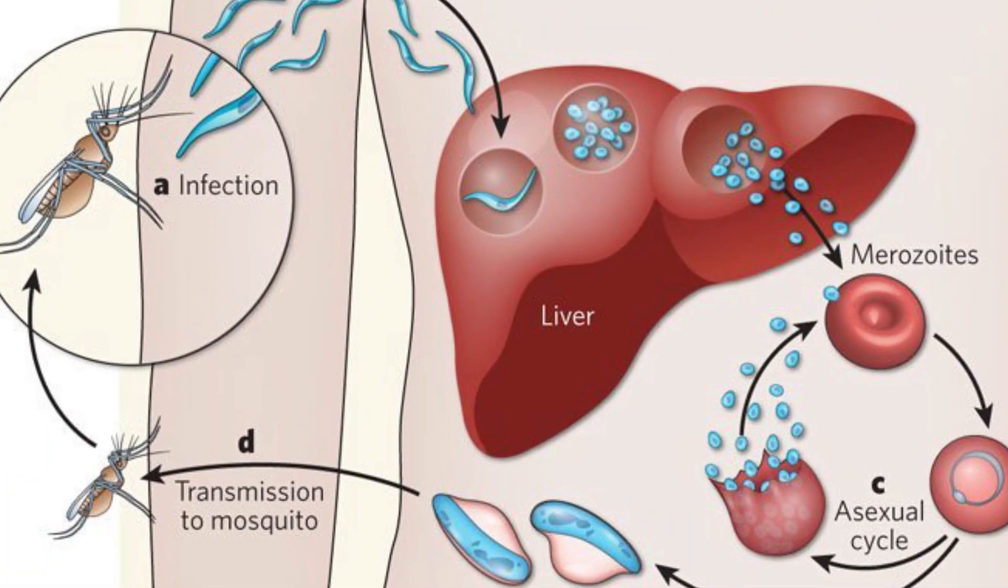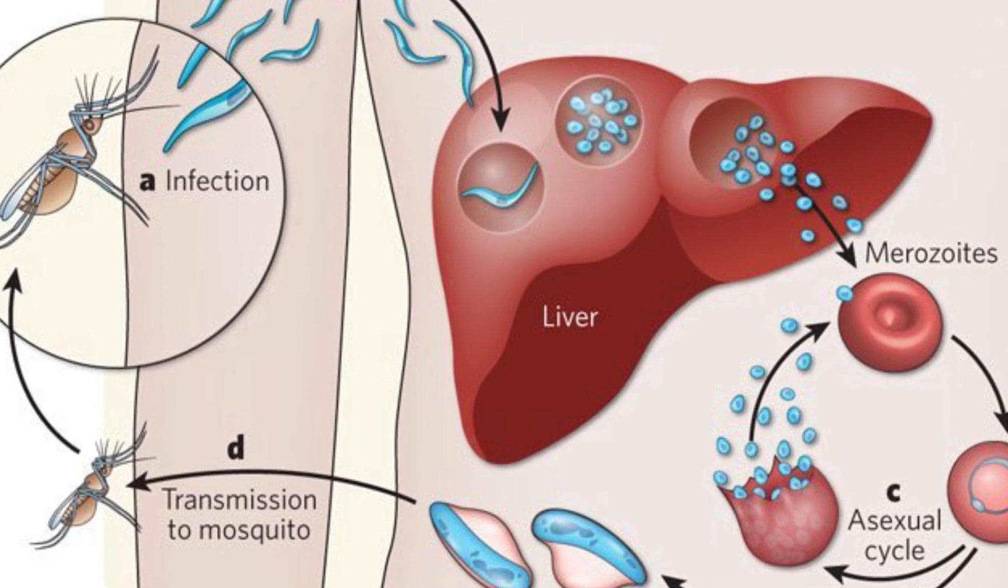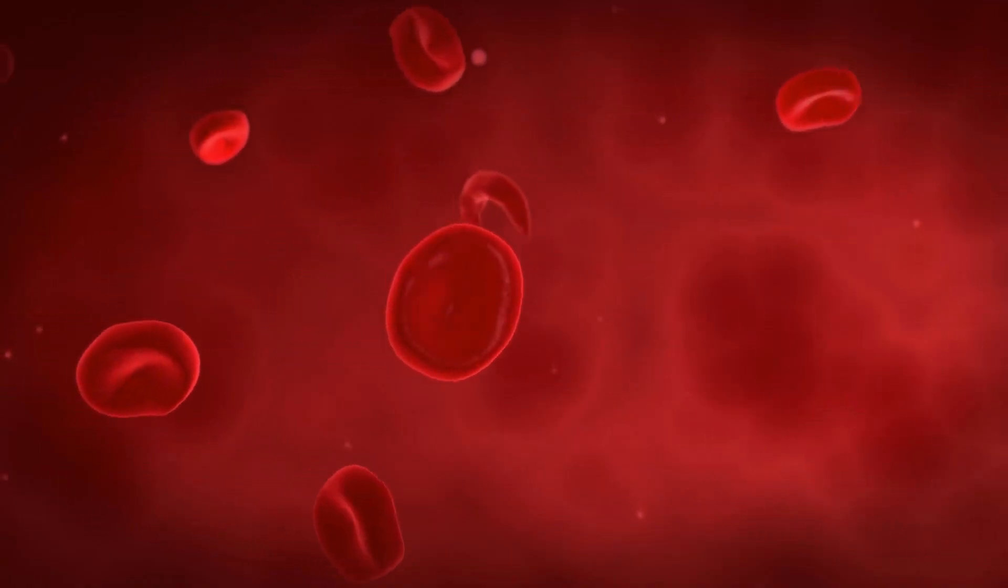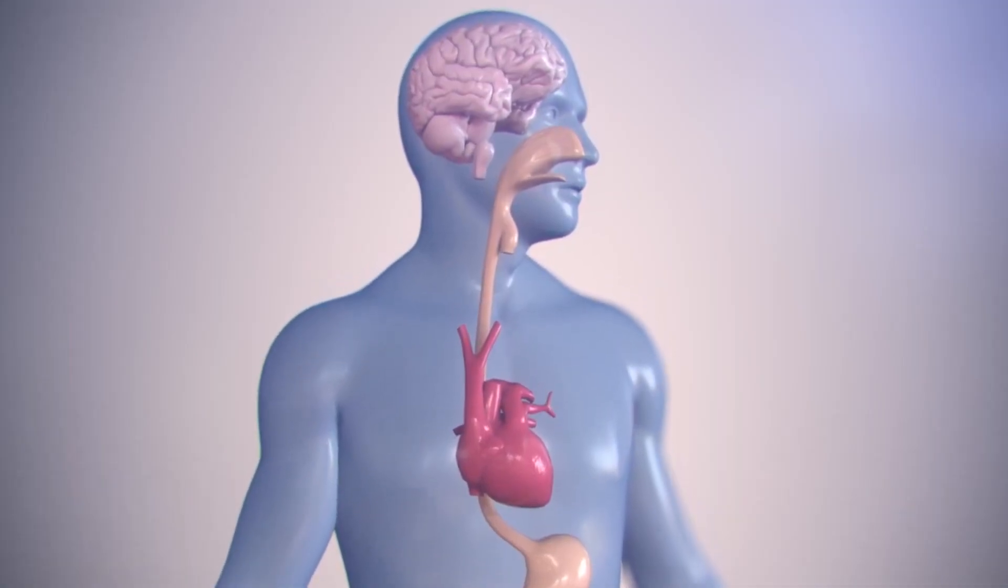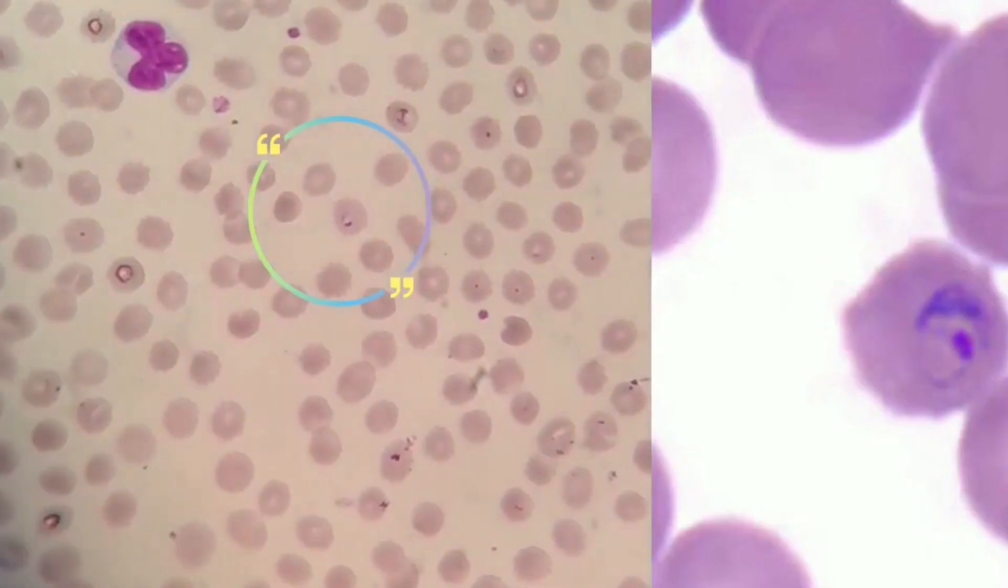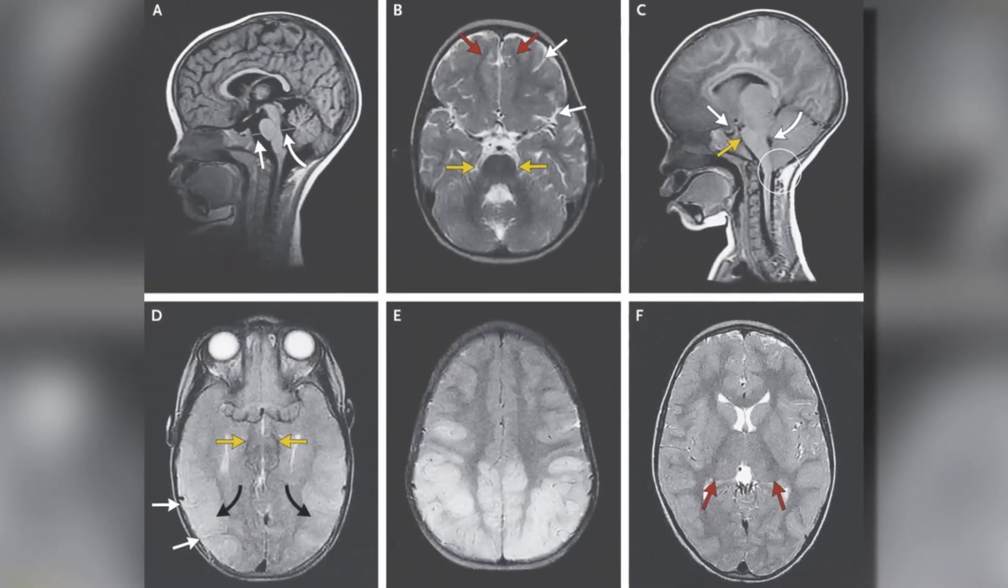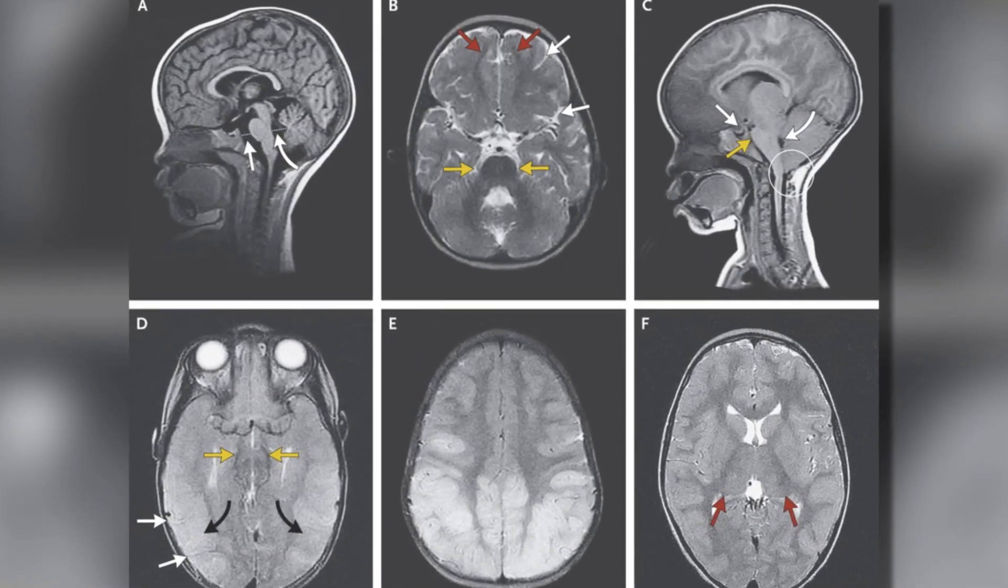However, in more severe cases, the parasite attacks the body's vital organs, causing severe anemia, loss of consciousness, seizures, coma, and neurological abnormalities. Certain versions of the parasite can even attack the brain directly and are usually fatal.